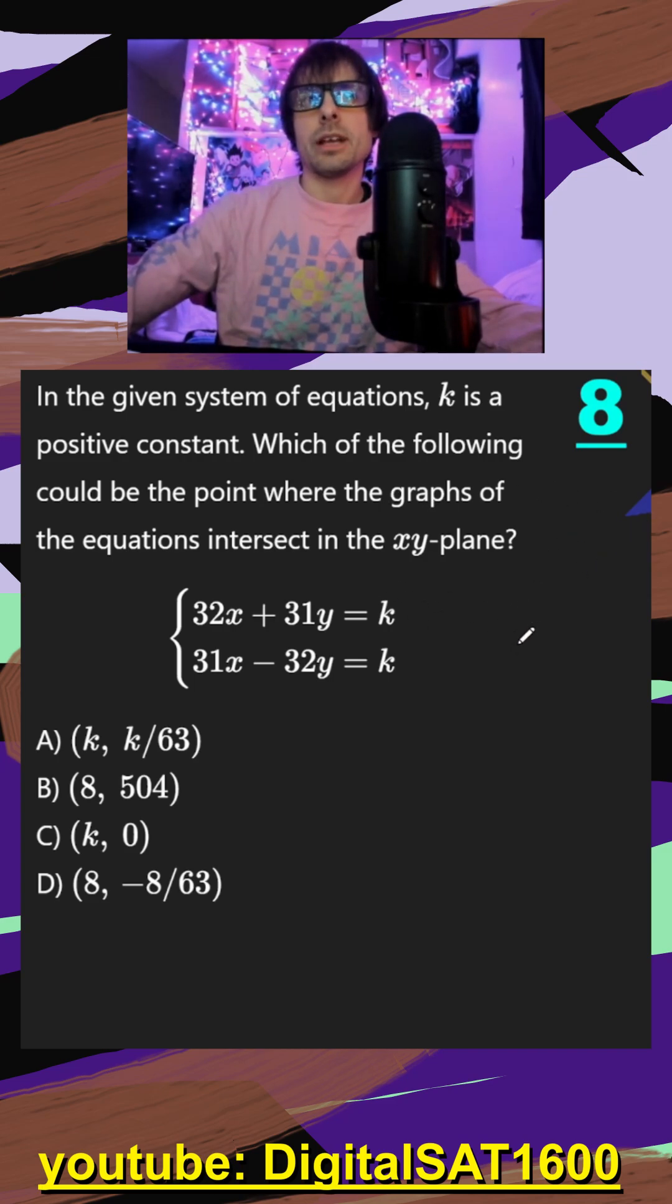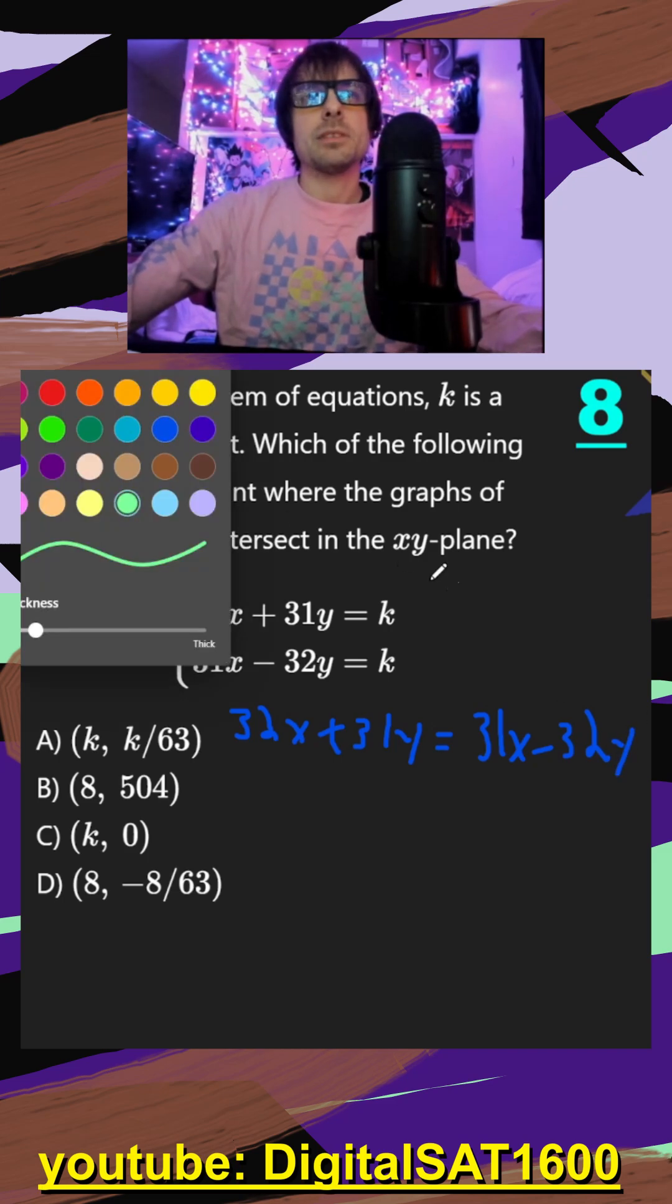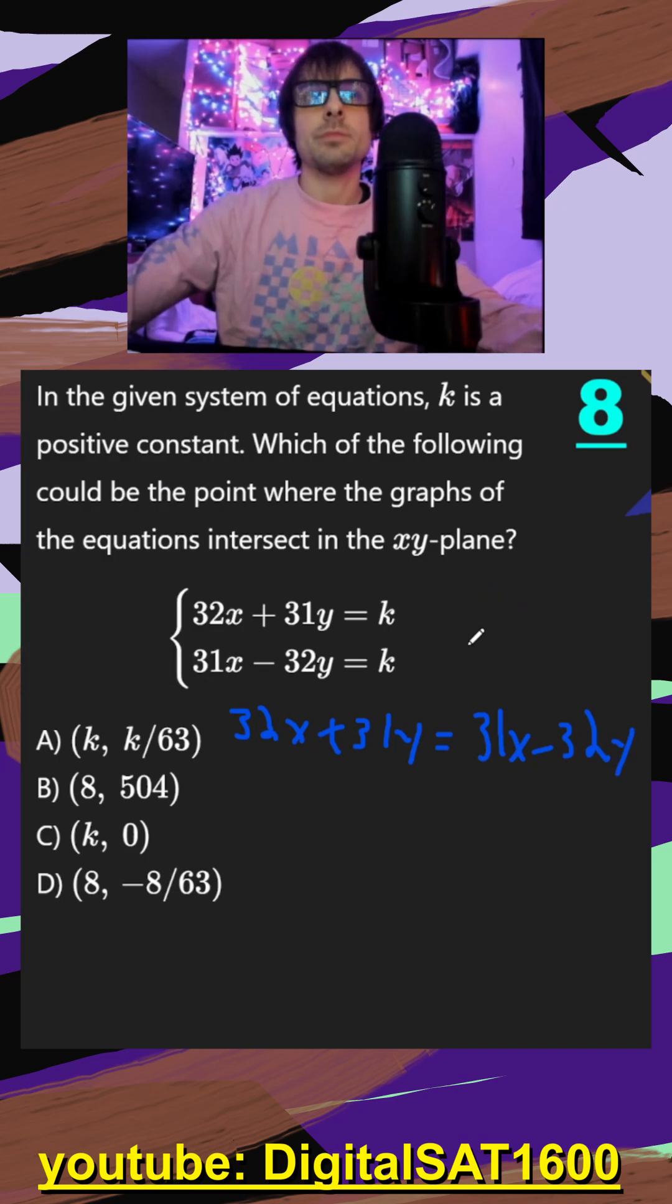I see that both of them are equal to k, so probably the first thing I would try is just setting them equal. So we could say 32x plus 31y is equal to 31x minus 32y. And if I get them in slope-intercept form, I should easily be able to plug in an x and a y to see if it works.